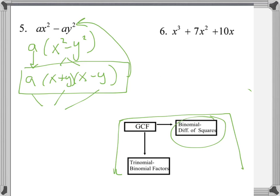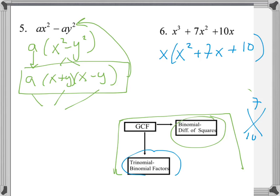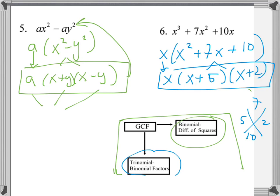For this next one, the GCF is x, so we factor it out and we're left with x(x² + 7x + 10). We have a trinomial, so let's check for binomial factors. Two numbers that add to 7 and multiply to 10 are 5 and 2. So this factors into x(x + 5)(x + 2). All three of these factors should multiply back to the original trinomial.